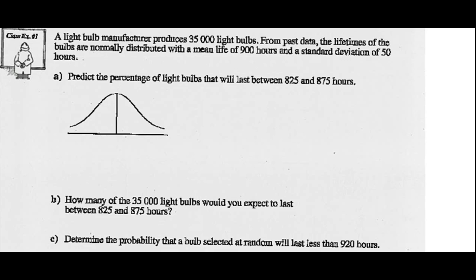A light bulb manufacturer produces 35,000 light bulbs. From past data, the lifetimes of their bulbs are normally distributed with a mean life of 900 hours. You can put that in as your average, and your standard deviation is 50. Predict the percentage of light bulbs that will last between 825 and 875 hours. So there is 825, there is 875.